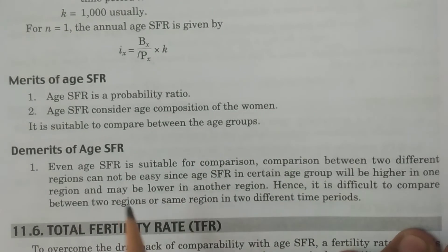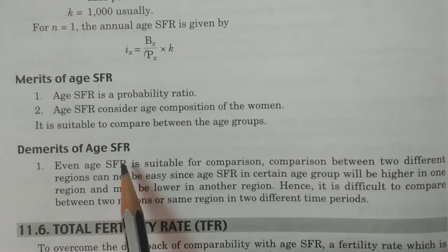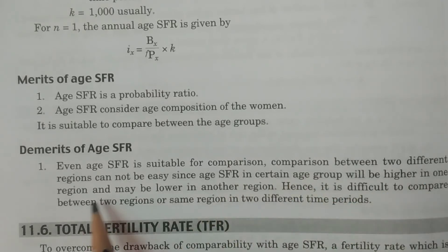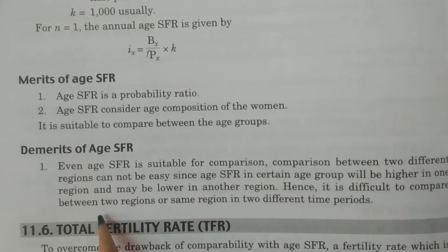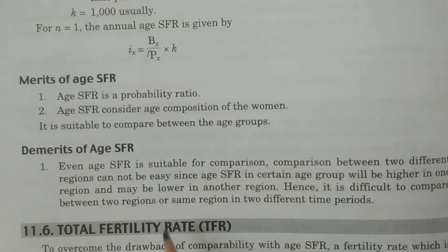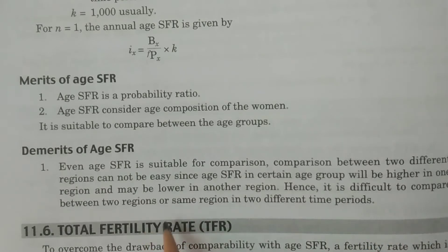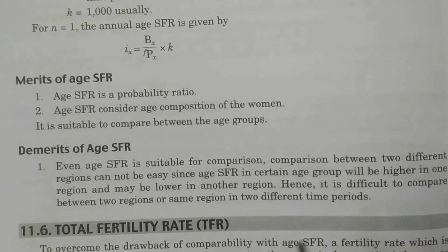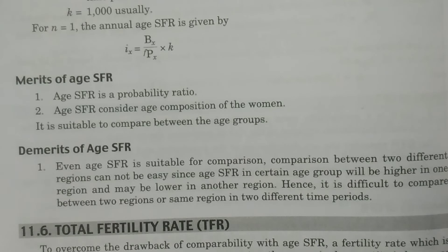Now the demerits. Even though age specific fertility rate is suitable for comparison, comparison between two different regions cannot be easy since age SFR in a certain age group will be higher in one region and may be lower in another region. Therefore comparison is not easy. Hence, it is difficult to compare between two regions or the same region in two different time periods. That is one of the drawbacks of age SFR.